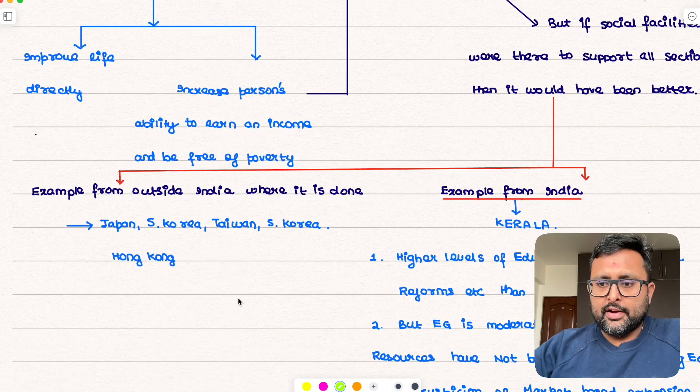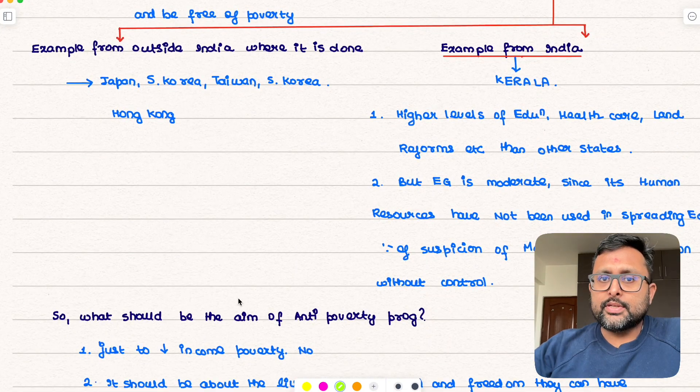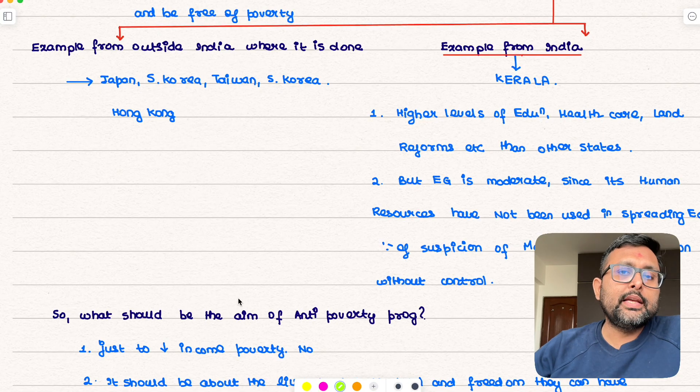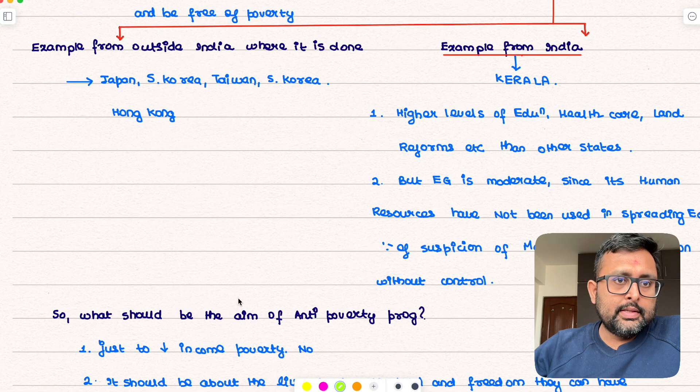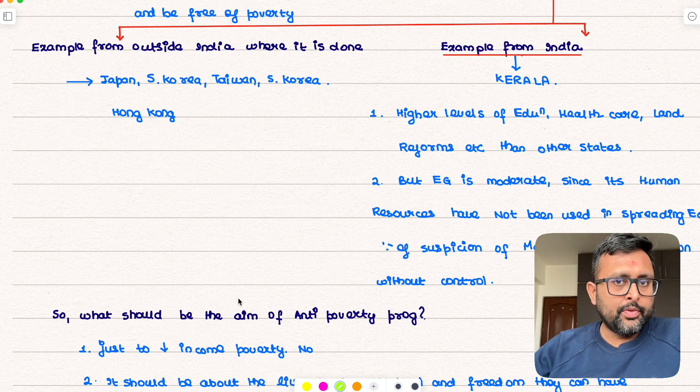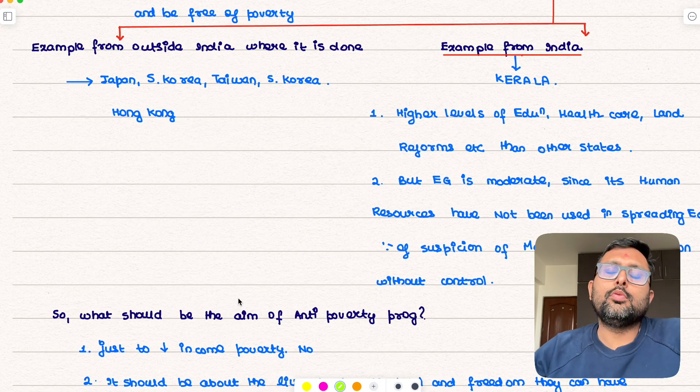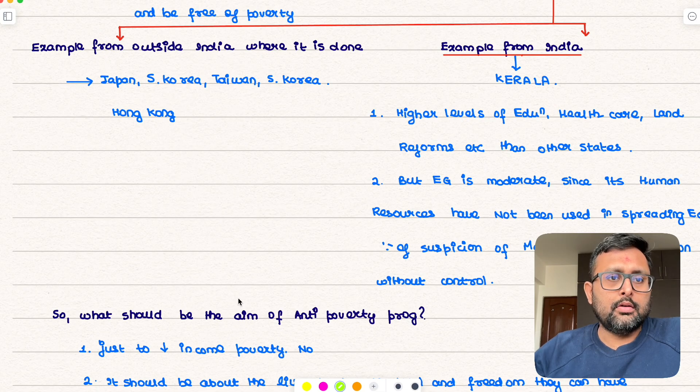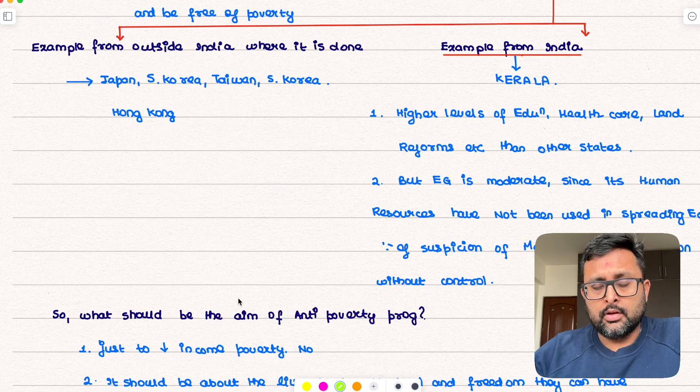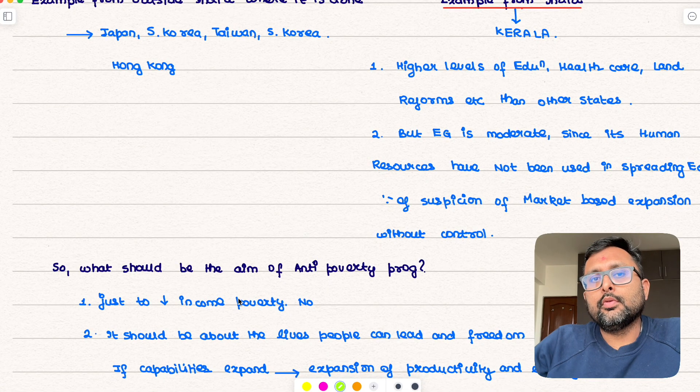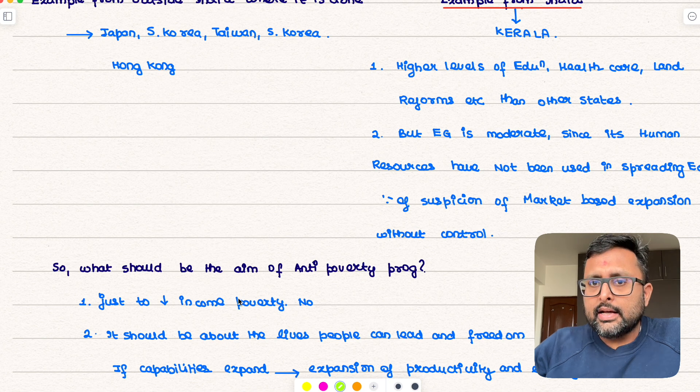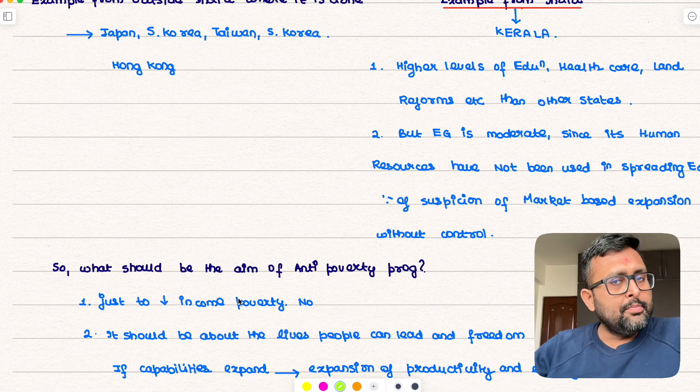There are two examples which we have taken. One of the example is from outside India where social infrastructure was developed first which led to improved capabilities and hence it also led to increase in income. For example, it happened in Japan, South Korea, Taiwan, Hong Kong and it also happened in China. And then there is an example from our own country also, Kerala for example.